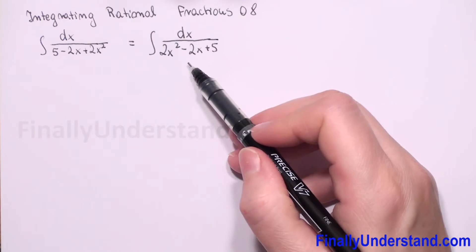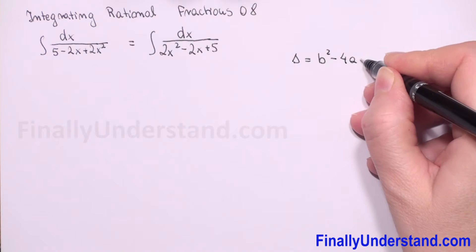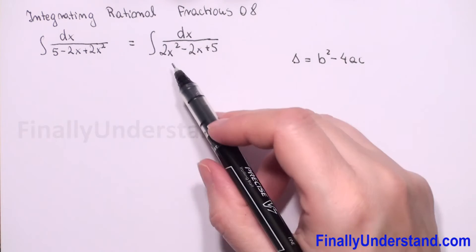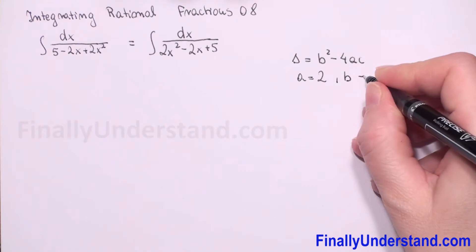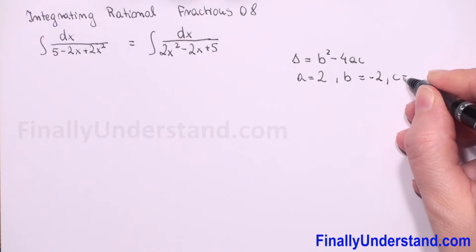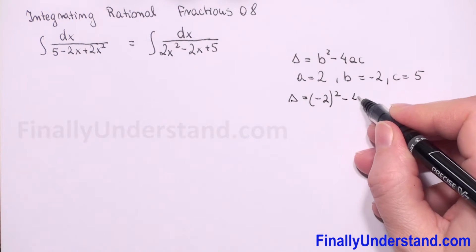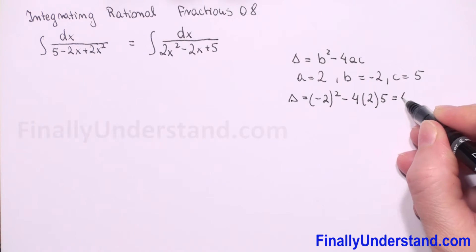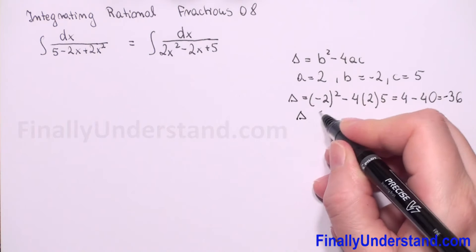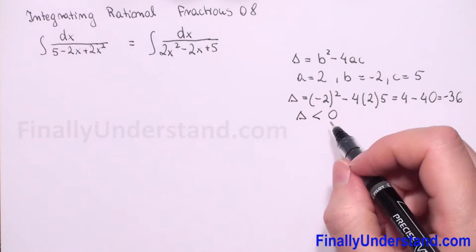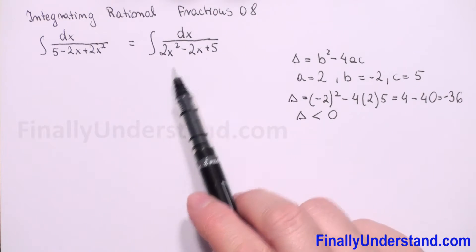To check if we can factorize our denominator, we will find delta. Delta is b squared minus 4ac — this is our discriminant. In this example, a is the coefficient before x squared which is 2, b is the coefficient before x which is negative 2, and c is the constant 5. So delta equals negative 2 squared minus 4 times 2 times 5, which is 4 minus 40, equal to negative 36. Since delta is less than 0, our denominator has no real solutions and cannot be factorized.